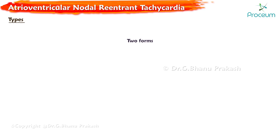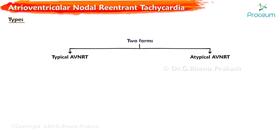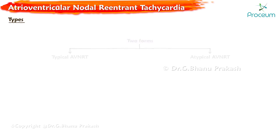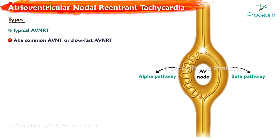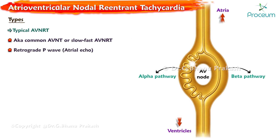Two forms of AVNRT occur: typical AVNRT and atypical AVNRT. Typical AVNRT, also described as common or slow-fast AVNRT, is where the impulse travels over the slow pathway towards the ventricles and returns via the fast pathway to the atria. The retrograde P-wave, or atrial echo, shows up at the end of the QRS. Ninety percent of all patients with AVNRT are diagnosed with typical AVNRT.